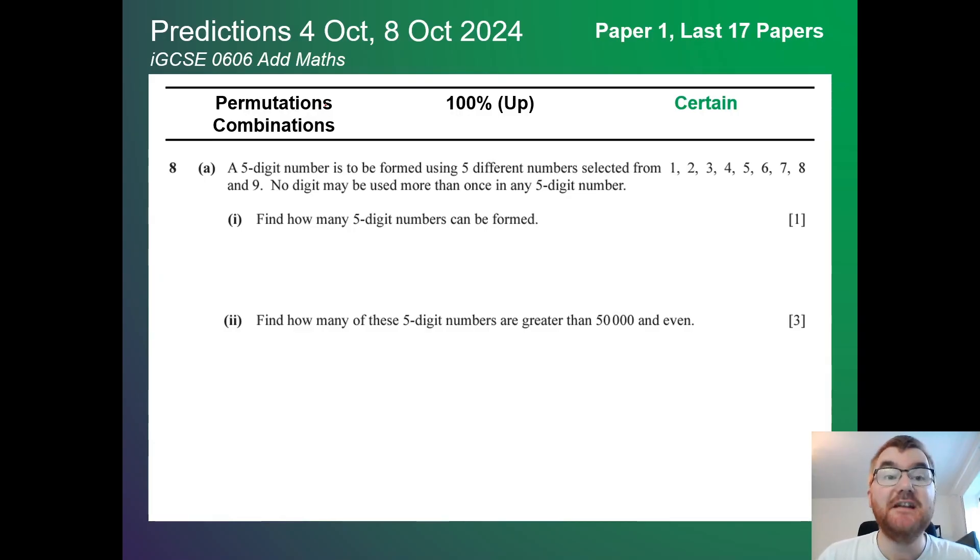So we'll start here with permutations and combinations. We've just crept into the certain category here on paper 1. This is a very typical question that you see in front of you. Knowing the difference between C and P is crucial to making sure you get the marks on these questions.